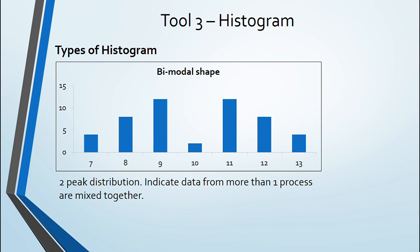Next is bimodal histogram. It has two peaks and indicates that a mixed data of more than two processes or two different time frame of one process is taken for plotting.